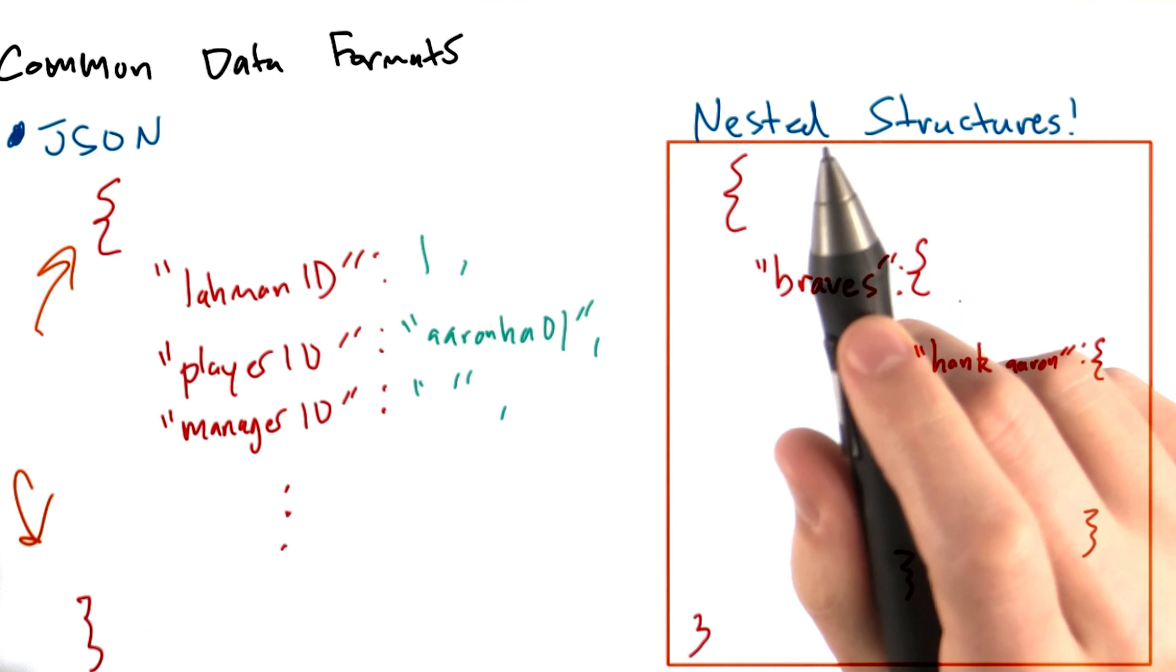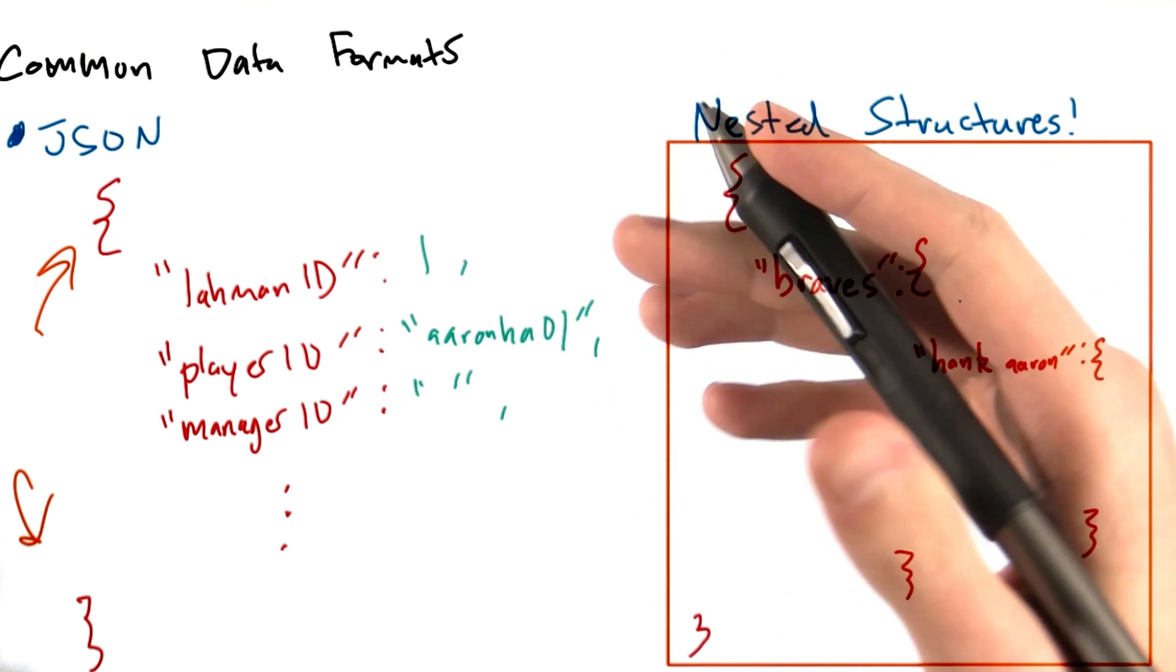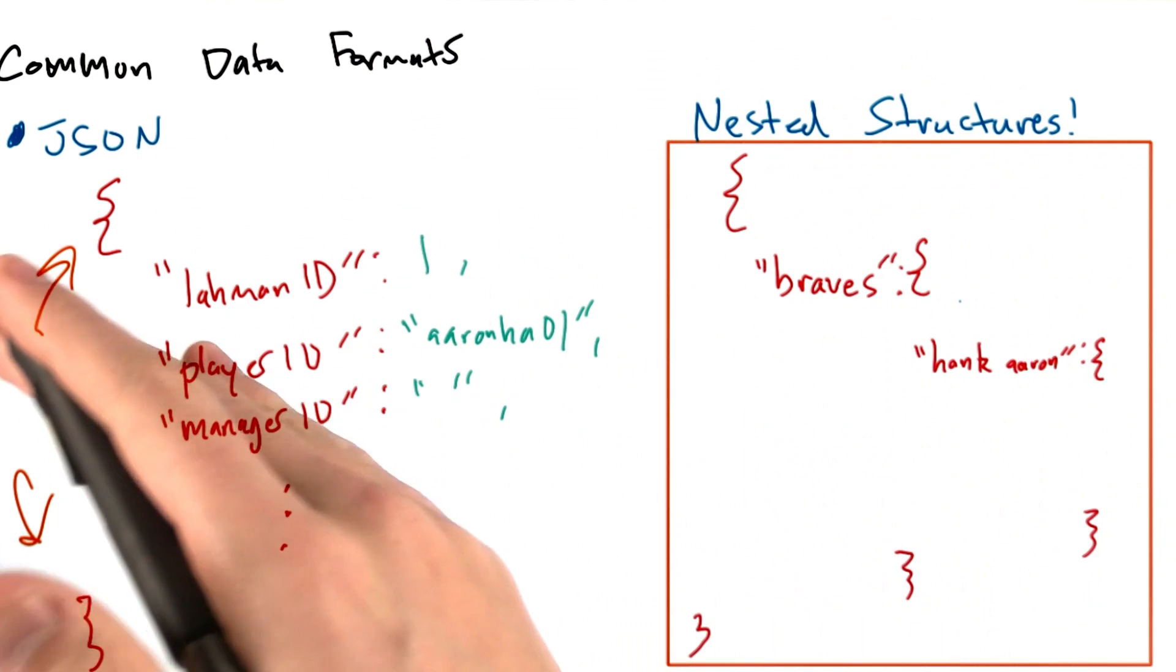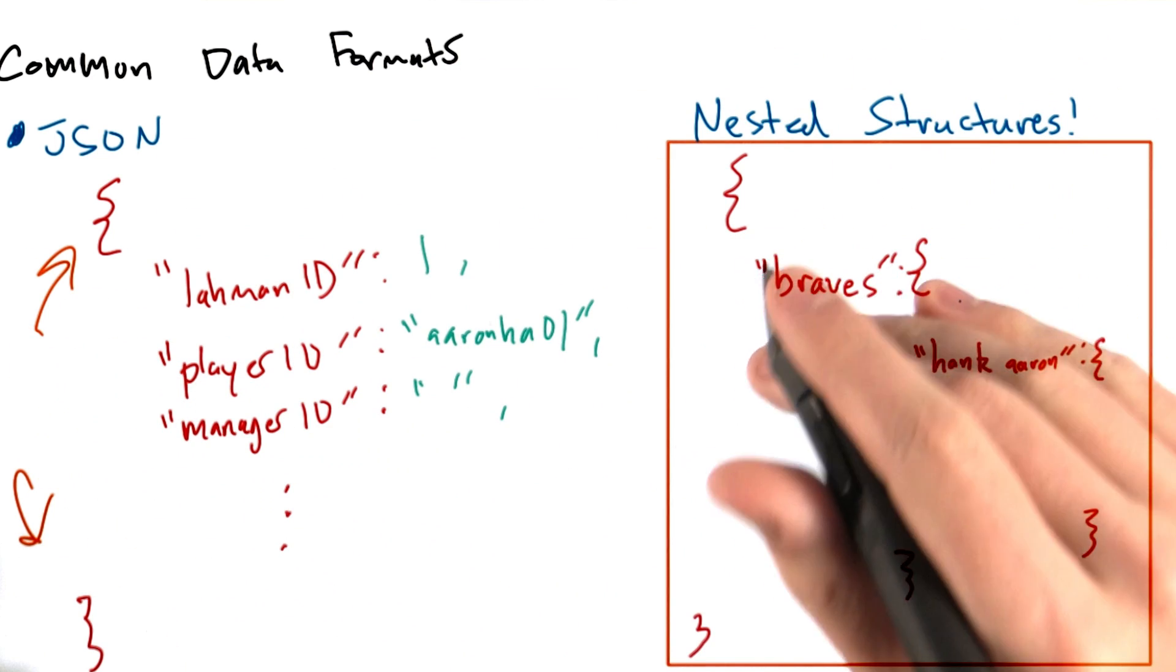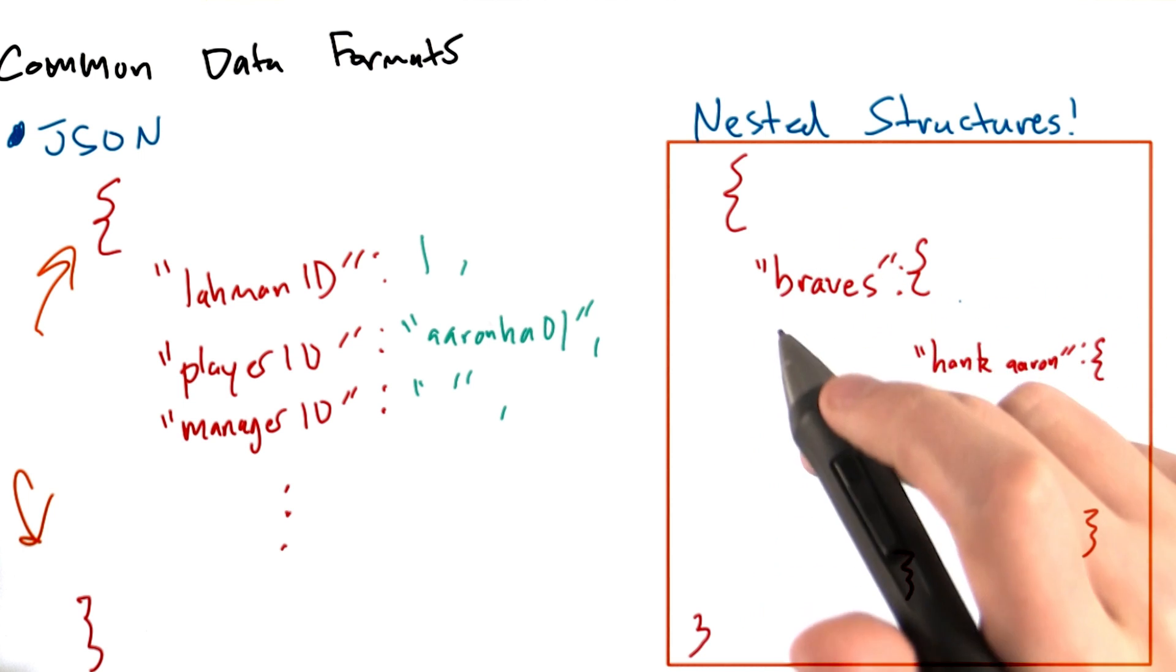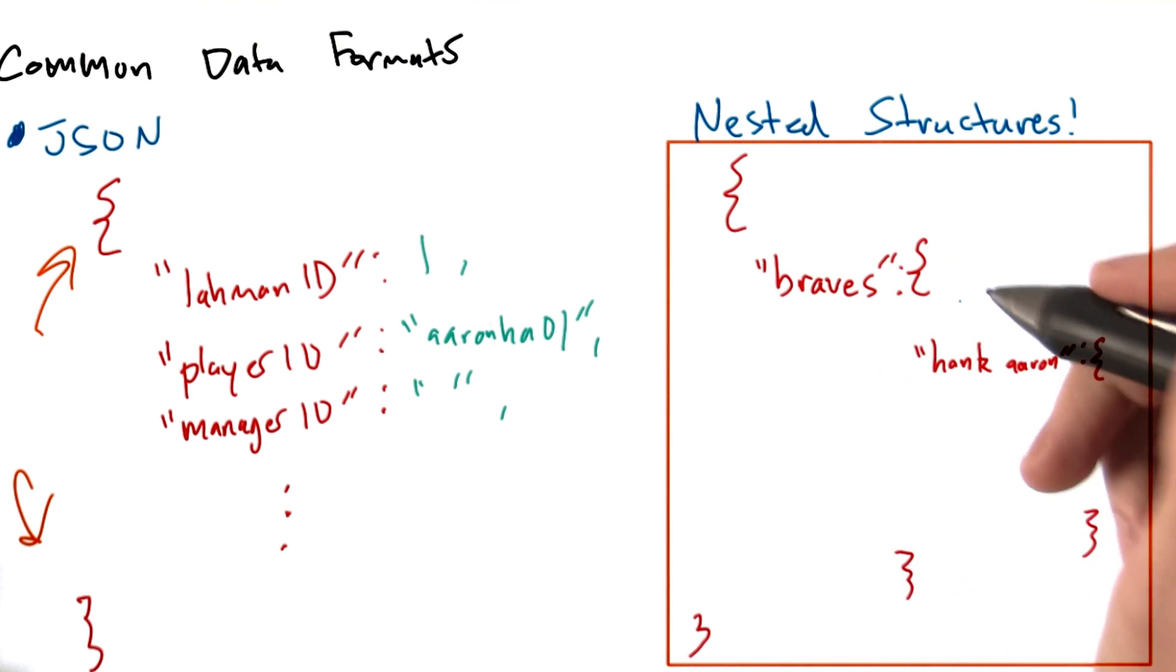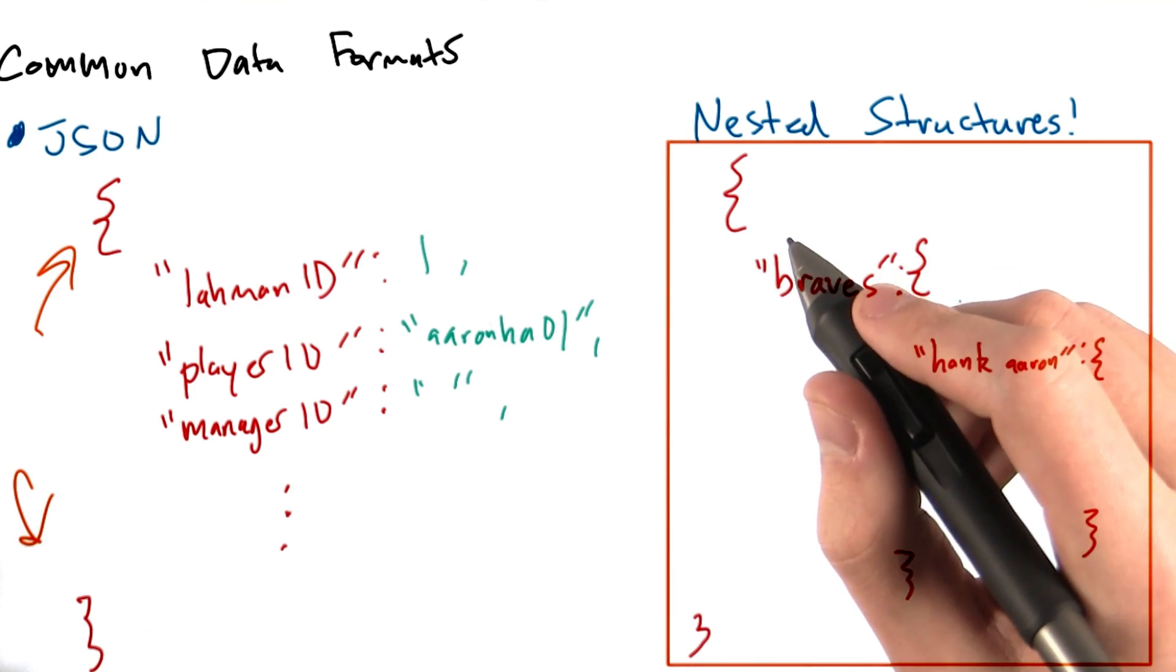One final note is to remember that when we talk about different formats that data can come in, it's not a matter of the file extension being .csv or being .json. A file format really has to do with how the data is organized inside of a file. So we could easily have data that is formatted in JSON or CSV, but that comes in a file whose extension is .txt.